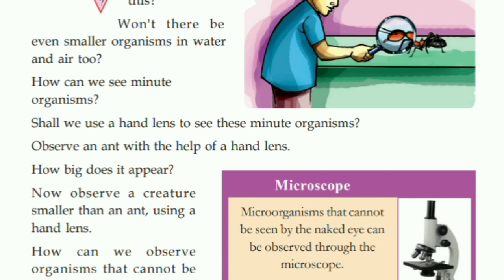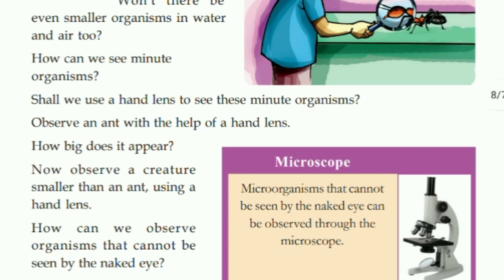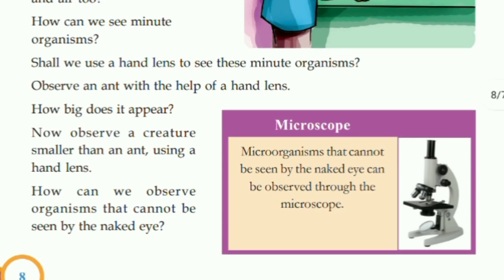We use a microscope to see extremely small organisms. We can also use a hand lens, but we cannot see all organisms with it. How big does the ant appear when you use a hand lens to see it?